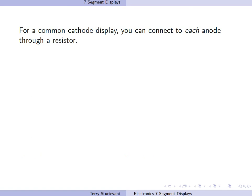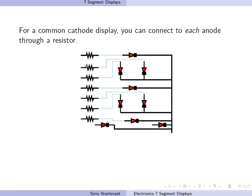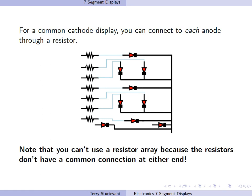For a common cathode display, you can connect to each anode through a resistor. Note that you can't use a resistor array because the resistors don't have a common connection at either end.